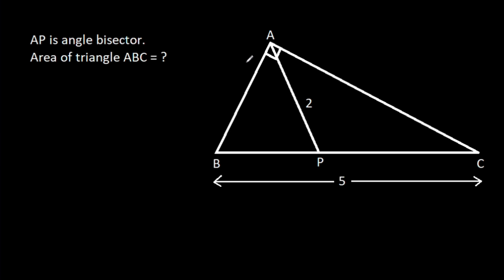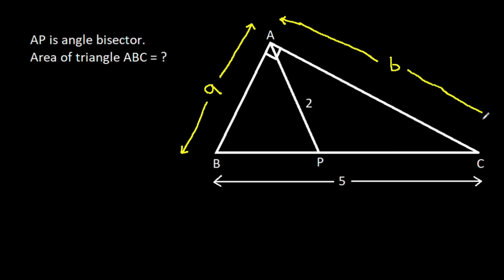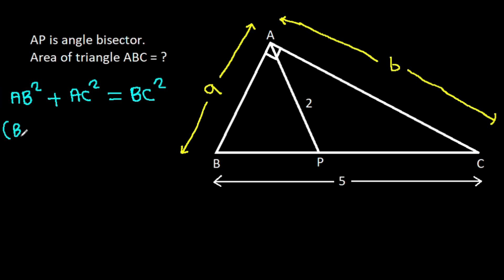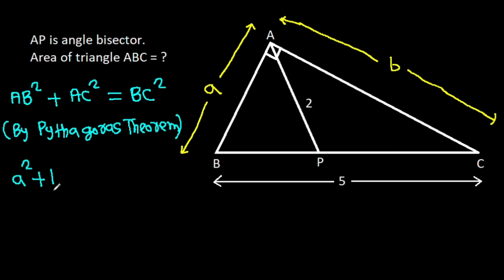Suppose AB is A and AC is B. Then AB squared plus AC squared equals BC squared by the Pythagorean theorem. So A squared plus B squared equals 5 squared, which is 25.